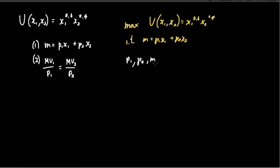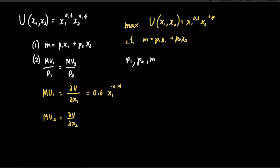The only thing we can find right now is actually MU1 and MU2. MU1 is just equal to the partial derivative of our utility function with respect to x sub 1, and MU2 is just equal to the partial derivative with respect to x sub 2. What we find is that MU1 is just 0.6 times x sub 1 raised to negative 0.4 times x sub 2 raised to 0.4. And for MU2, it's just 0.4 times x sub 1 raised to 0.6 times x sub 2 raised to negative 0.6.